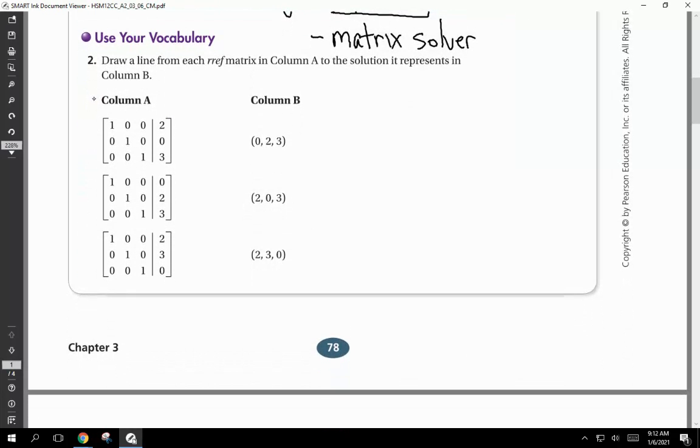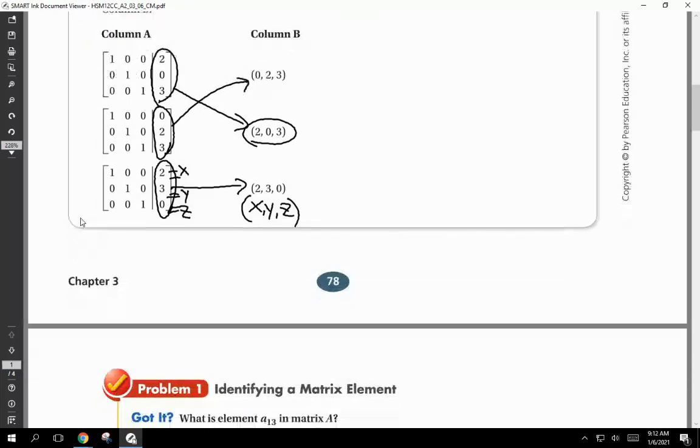Use your vocabulary. Draw a line from each RREF matrix in column A to the solution it represents in column B. Here we go. We have 2, 0, 3 right here. So we're looking for 2, 0, 3, and it's right here. We're going to draw a line. Not that hard, right? Then we have 0, 2, 3. Draw a line to the 0, 2, 3 right there. 2, 3, 0, right there it is. So what it's saying is this is the X, this is the Y, this is the Z. So this must be the X, the Y, and the Z. That's what we're saying right now. That's RREF.